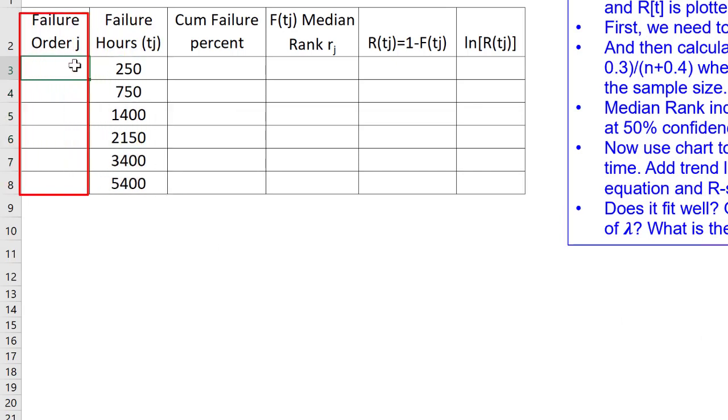Now, I provide failure order number J from 1 to 6. At 250 hours, we have the first failure. At 750, we have the second, etc. So, we put 1, 2, 3, 4, 5, 6. If we consider this data as representative, although we have only sample of 6 numbers.